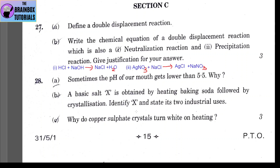In Part B, I have written the chemical equation of a double displacement reaction which is also a neutralization reaction and a precipitation reaction, with justification. The first is neutralization: HCl and NaOH make salt and water — NaCl and H₂O. The second is precipitation: AgNO₃ (silver nitrate) and NaCl react to make AgCl and NaNO₃.